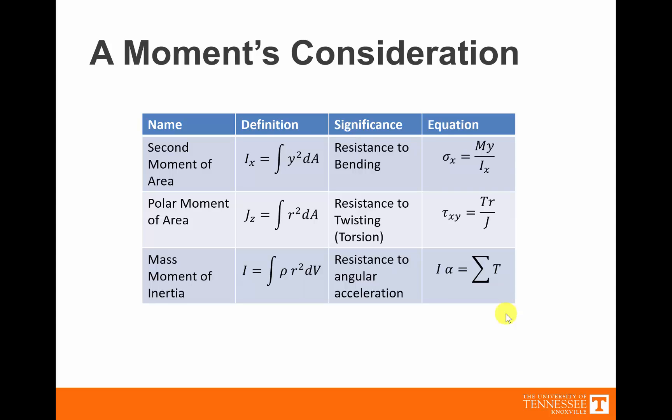The second moment of area is I = ∫y² dA, and it resists bending. Then we have the polar moment of area, which resists twisting — that's J = ∫r² dA, related to torsion. Notice those two are fairly similar: they have the same units and accomplish the same thing in different directions — one resists bending, the other resists torsion. In both stress equations, I or J is in the denominator, so the bigger I or J is, the more resistance the material has to bending or torsion.